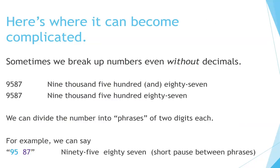Here's where it can become complicated. Sometimes we break up numbers even without decimals. For example, 9,587 can be divided into phrases of two digits each — we can say '95, 87' with a short pause between phrases.